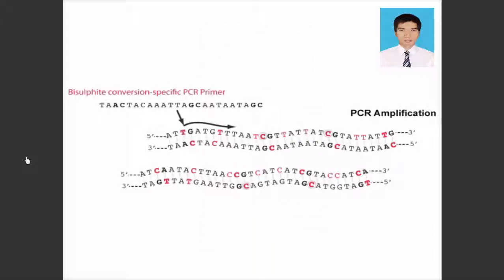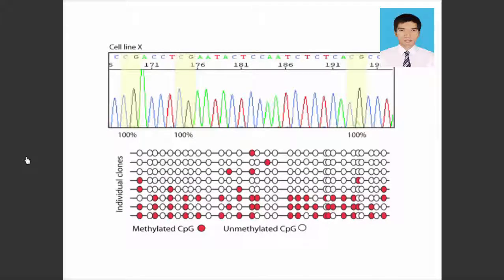Next, the target region is amplified by bisulfite conversion-specific primers and PCR amplification. The final step is cloning and sequencing of the PCR product to give single nucleotide resolution for methylation across the DNA molecule.